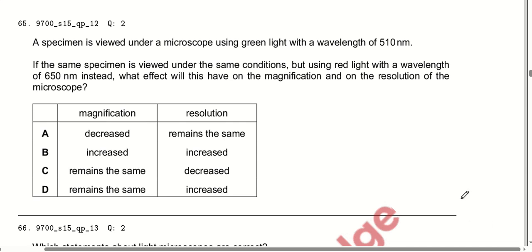A specimen is viewed under a microscope using green light with a wavelength of 510 nanometres. The same specimen is then viewed using red light with a wavelength of 650 nanometres. The wavelength has increased. Whenever the wavelength increases, the resolution decreases. However, the magnification remains the same because it depends on the capacity of the microscope being used. Option C is correct.